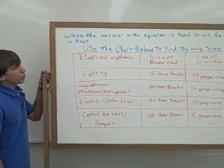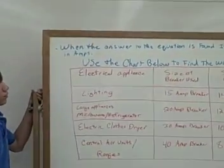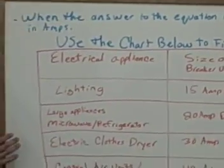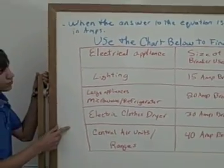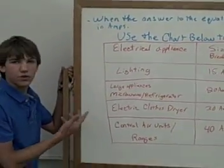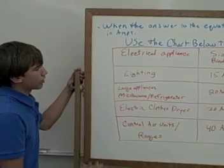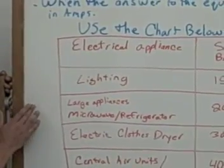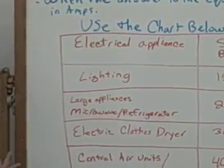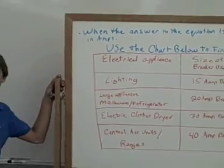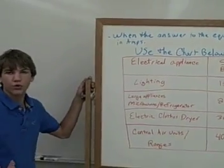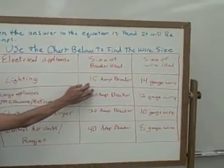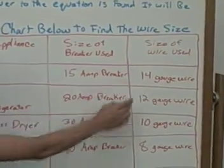When the answer to the equation is found, it will be in amps. You're going to use the chart below, which is found in the National Electric Code — basically the same thing I have here simplified down. So let's say you're doing a lighting circuit in your house. When you do that equation and find out that it draws only four or five amps, you would use a fifteen-amp breaker, then you would use fourteen-gauge wire.